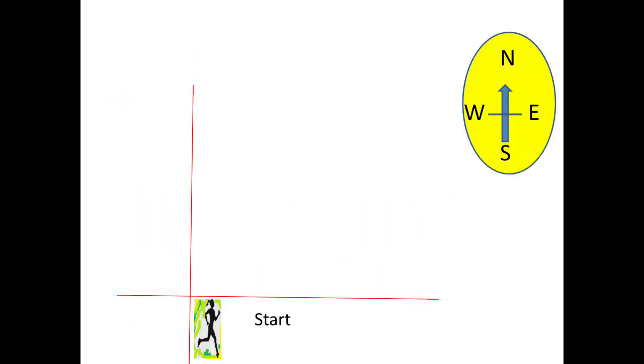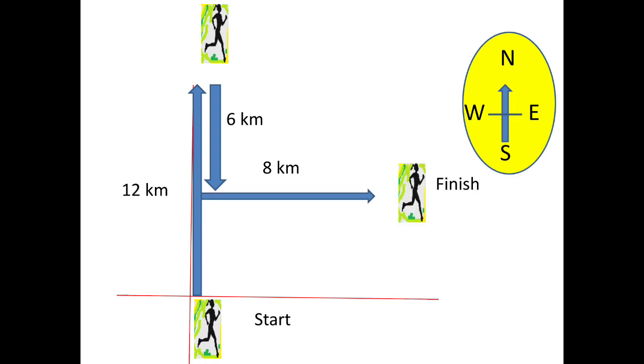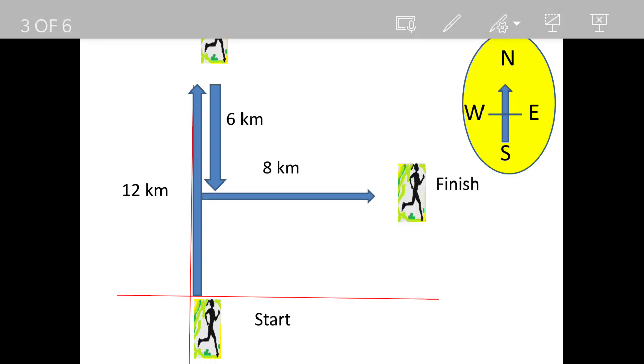Now we will see how. I have drawn a small diagram. Start point is shown and coordinate directions are also shown. 12 kilometers she goes north, 6 kilometers she comes back south. That means she is now 6 kilometers from her start point, then she goes 8 kilometers and that is her finish point.